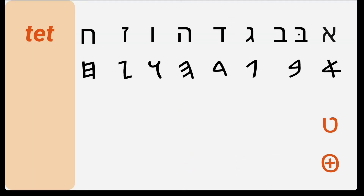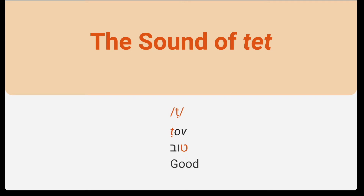Next is the letter Tet, which makes a T sound like in the name 'Thomas,' or like in the Hebrew word Tov, meaning 'good.' Whenever we want to transliterate Tet into Latin characters, it will appear as a T with a dot underneath it, because historically it had a different pronunciation from the one we use today. But we're not going to worry about that right now — just remember that Tet makes the T sound, like in the Hebrew word Tov.